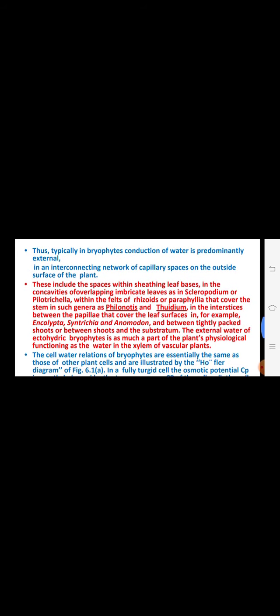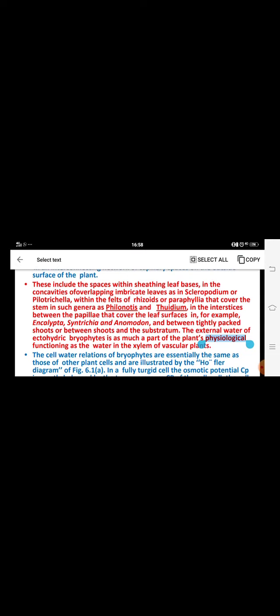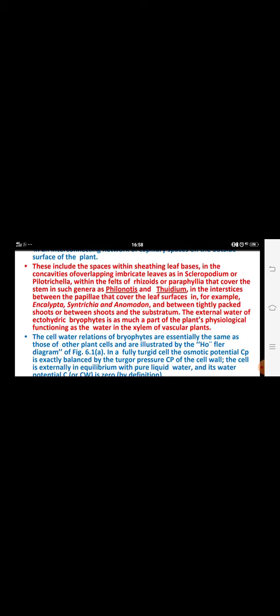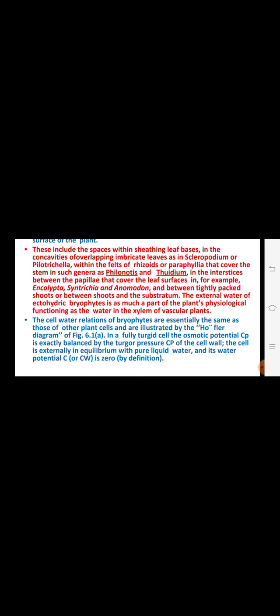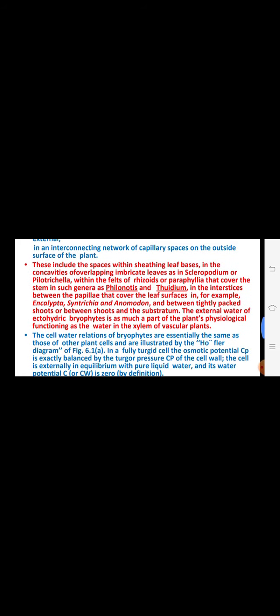Water conduction is an important adaptive character — capillary spaces and sheathing leaf bases are most important. Good examples are Philonotis and Thuidium, which show paraphyllia — rhizoid-like capillary structures. Other examples like Encalypta, Syntrichia, and Anomodon also show shoots along with rhizoidal paraphyllia.